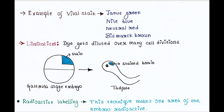Examples of vital stain include Janus green, Nile blue, neutral red, and Bismarck brown. Limitations of this technique: the dye gets diluted over many cell divisions. Once multiple cell divisions occur, many cells get generated and the dye applied to a few cells of the embryo gets diluted in the new daughter cells after many generations.